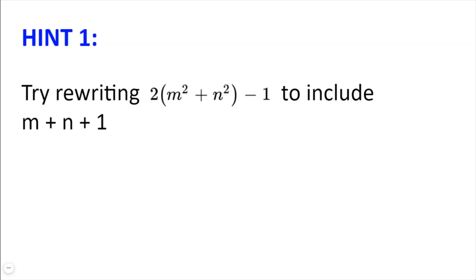Hint number 1. Try rewriting 2 multiplied by m squared plus n squared minus 1 to include m plus n plus 1, as this may help simplify the problem.